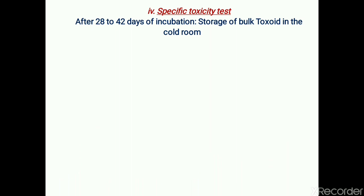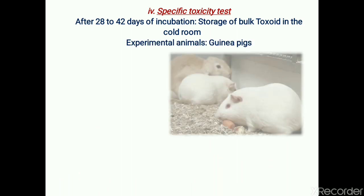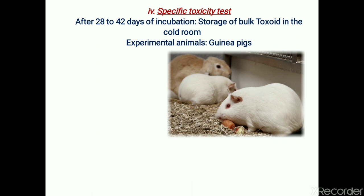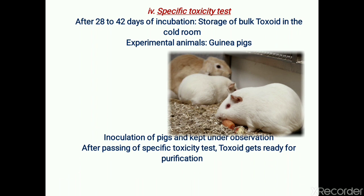The next step is the specific toxicity test, in which the toxoid is tested to determine whether it is suitable for inoculation in humans or animals. It is first carried out on experimental animals. After 28 to 42 days of incubation, the bulk toxin is stored in a cold room. Further testing is carried out on experimental animals like guinea pigs, which are inoculated with the preparation and kept under observation for any symptoms from minor to lethal, such as fever and irritation.